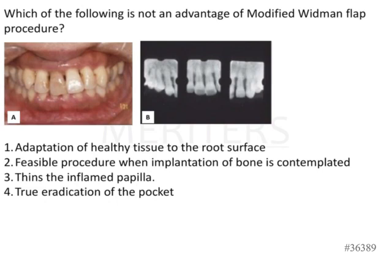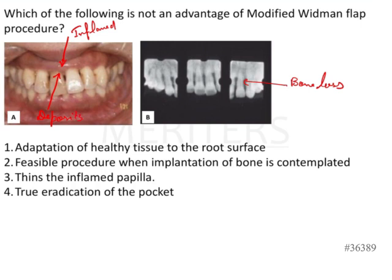The question asks which of the following is not an advantage of the modified Widman flap procedure. In the images from Carranza, image B shows angular bone loss, and image A shows interdental papilla that appears inflamed or fibrosed — inflammation over time can lead to fibrosis. There are also deposits visible on the roots that need to be cleared.